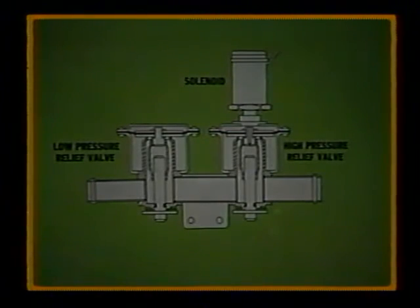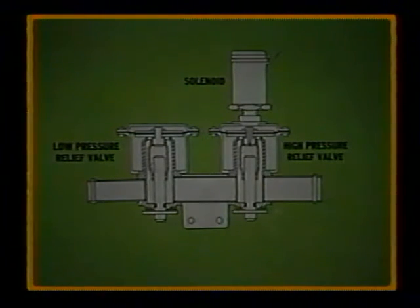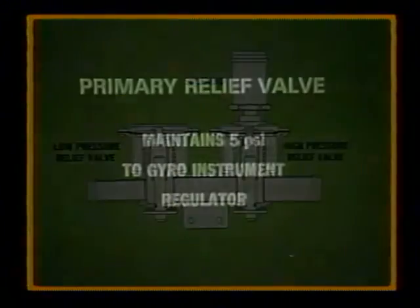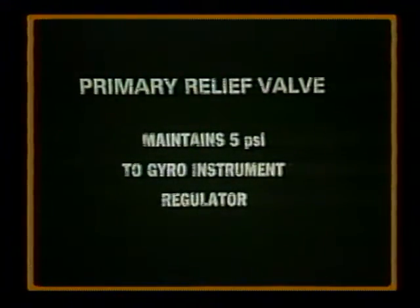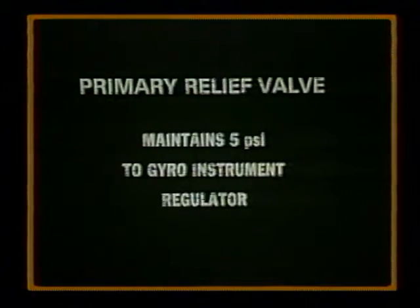Two-stage pressure relief valves used by many twin-engine aircraft maintain a low-pressure setting to the gyro pressure regulator. When the solenoid on the relief valve closes off the low-pressure side, the pressure then rises to the level required by the de-icer boots. A second valve, the primary relief valve, maintains air pressure to the gyro instrument regulator. Generally, this is about 5 psi.